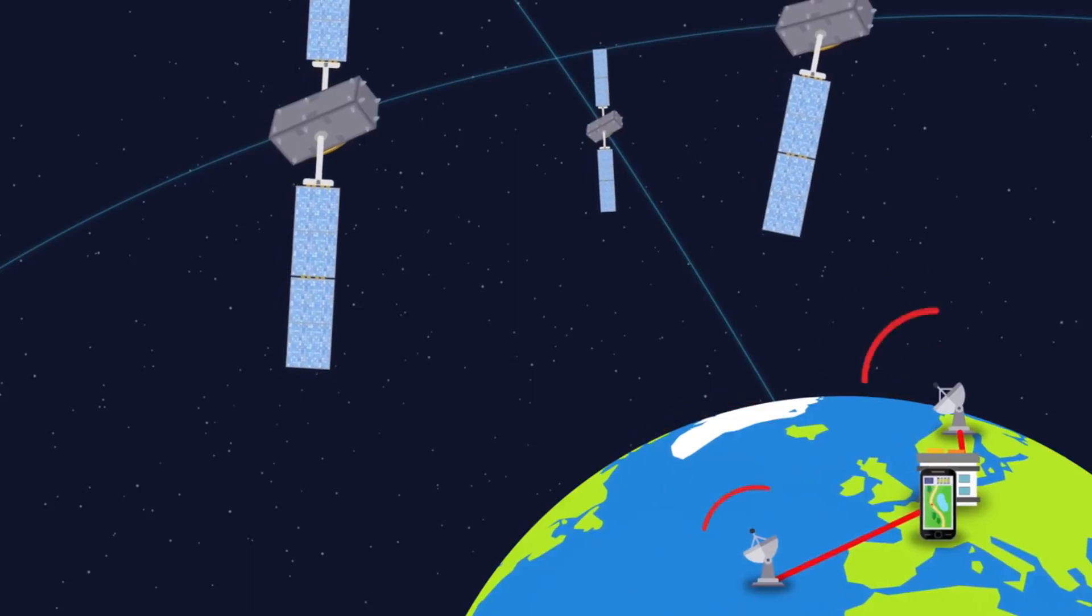These satellites send radio waves containing the satellite's position and time of sending to your GPS receiver, which records the time of receiving. Later, it calculates the distance between you and the satellites.